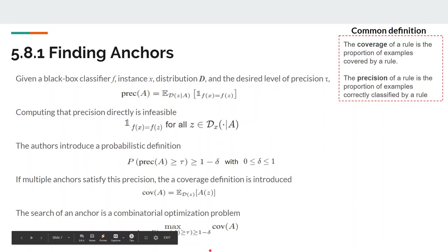Thus, the rule that has the highest coverage among all eligible rules that satisfy the precision threshold given the probabilistic definition is chosen. These rules are thought to be more important as they describe a large part of the model.